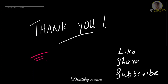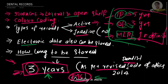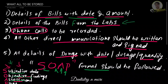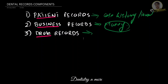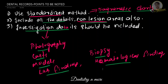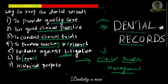That was all about dental records maintenance and its importance. To summarize, we covered the storage duration and how to store records, the difference between IP, OP, and MLR record types, the SOAP acronym for recording data, the importance of signatures and informed consent, and the objective nature of data. We also discussed the components of dental records and the introduction to the topic. I'll come up with a new topic in Dentistry and More — thank you.